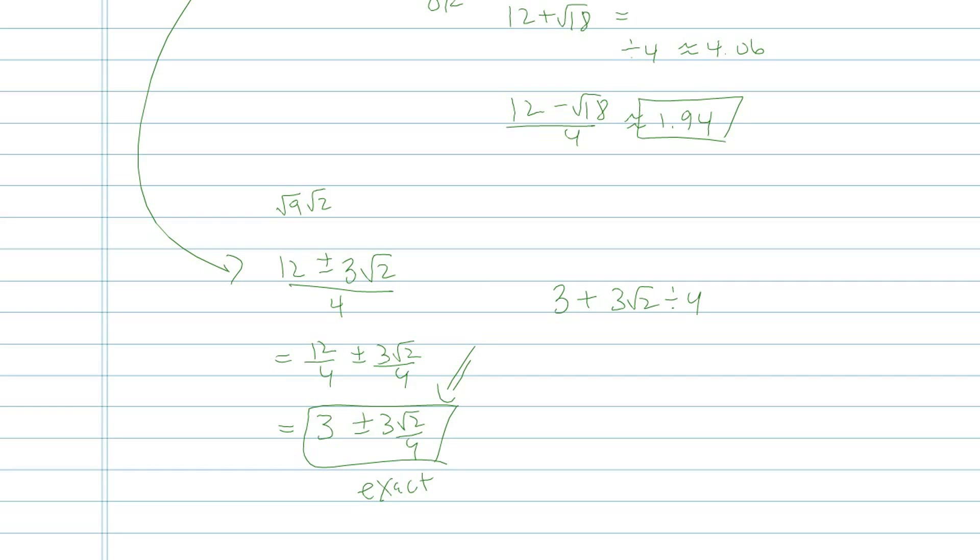Notice how in this situation, the 3 root 2 is all that's divided by 4. So I could type it in my calculator like this: 3 plus 3 root 2 divided by 4. That would work out.